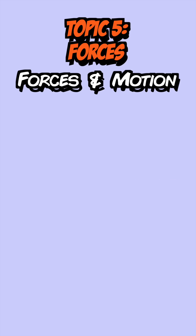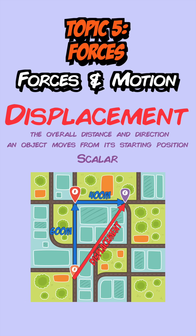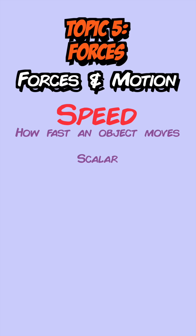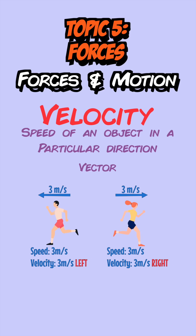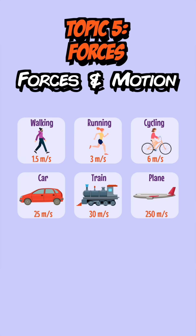Distance is how far an object moves and is a scalar quantity, whereas displacement is the overall distance and direction an object moves from its starting position and is a vector. Speed is a scalar telling you how fast an object moves, whereas velocity is the vector version — the speed of an object in a given direction. The equation for speed is distance divided by time, and there are some typical speeds to be aware of.